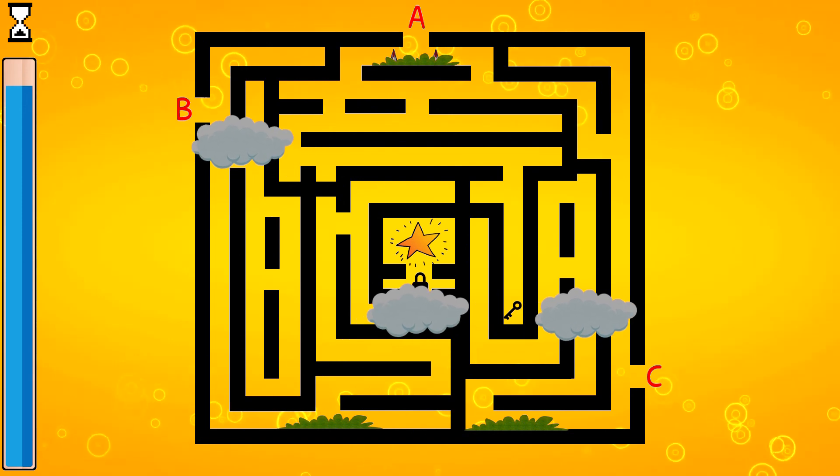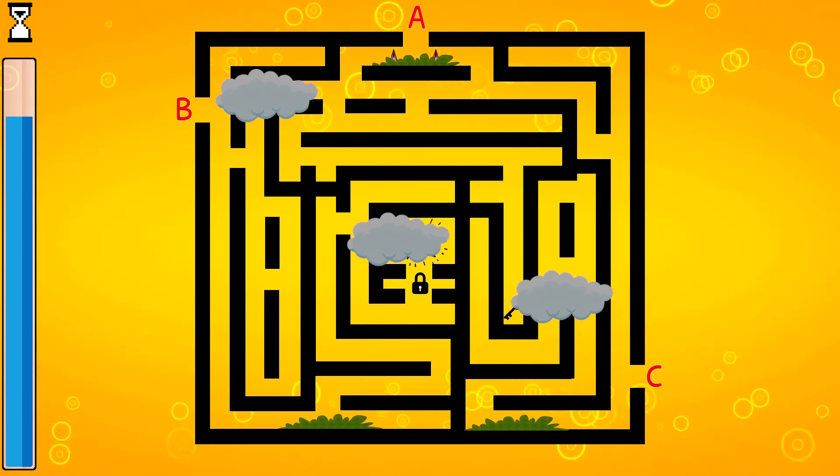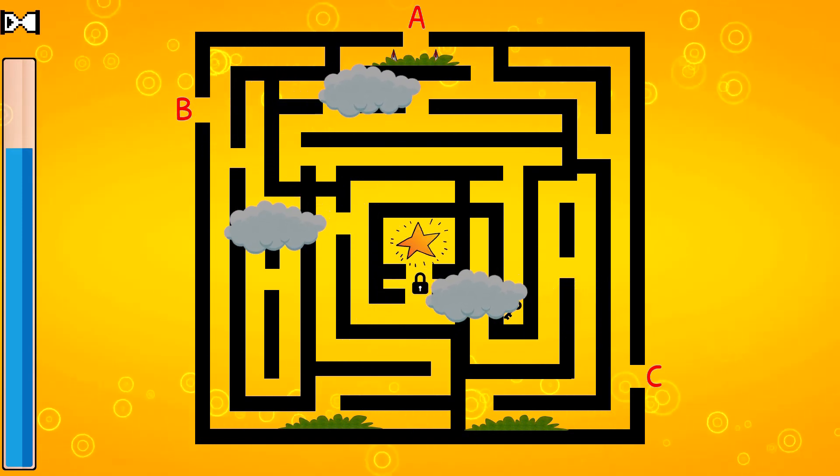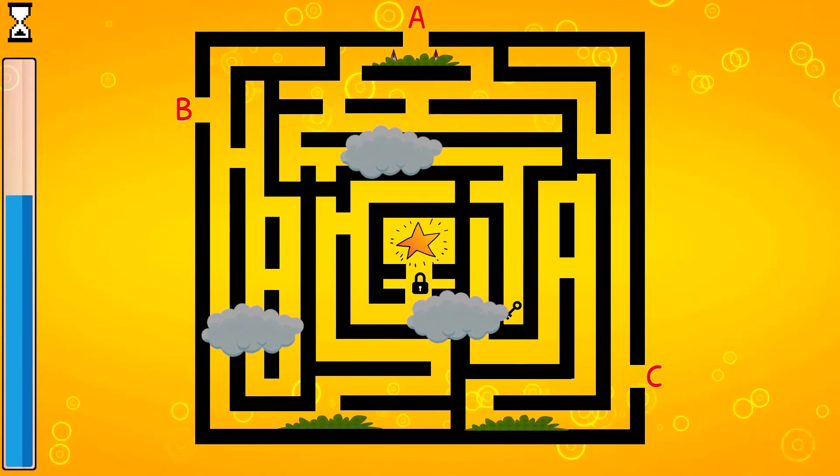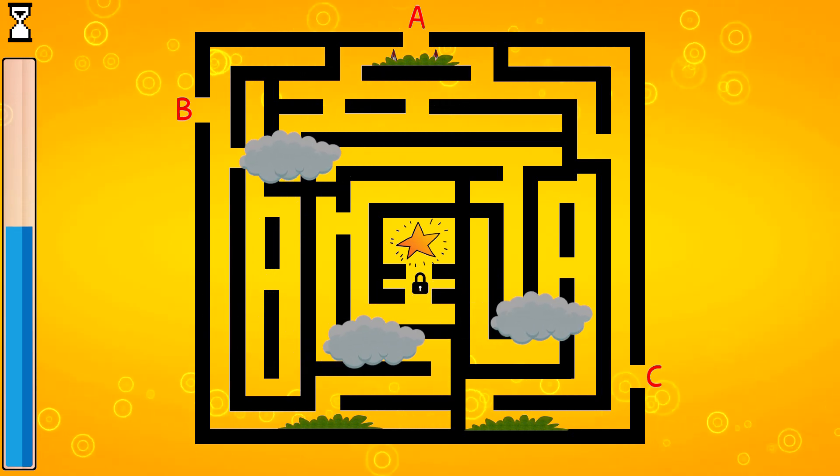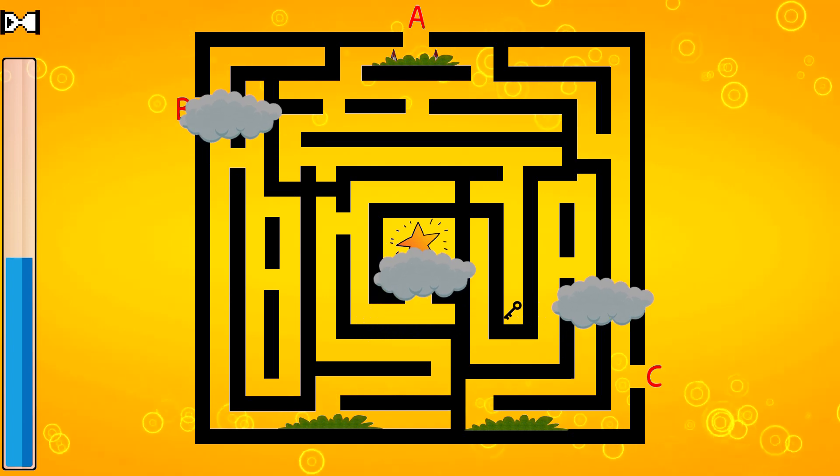These clouds are blocking your vision on path A to reach the star.